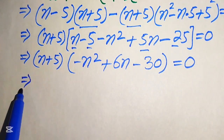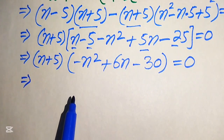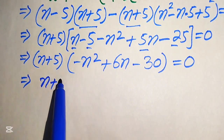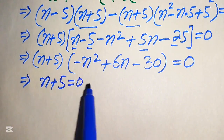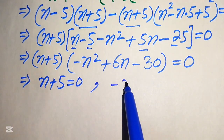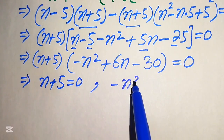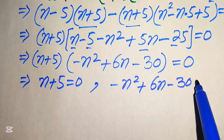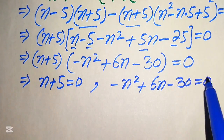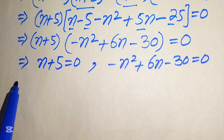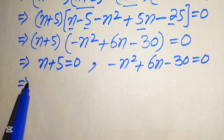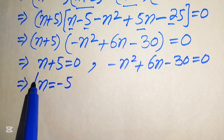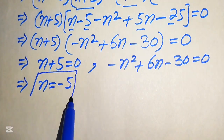We split into two cases. Case one: n plus 5 equals zero, which gives us n equals minus 5. This is the first real root of the equation.